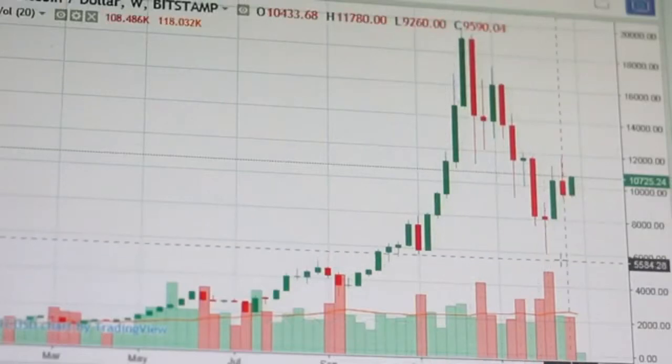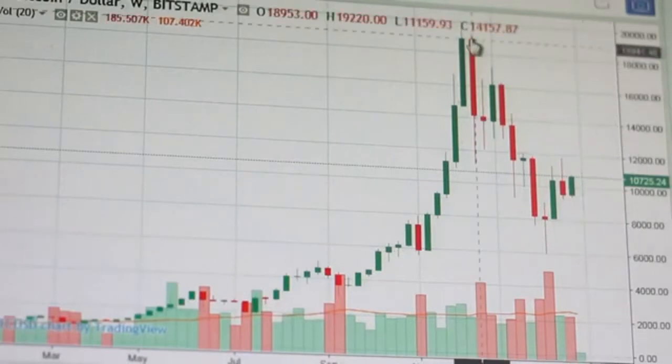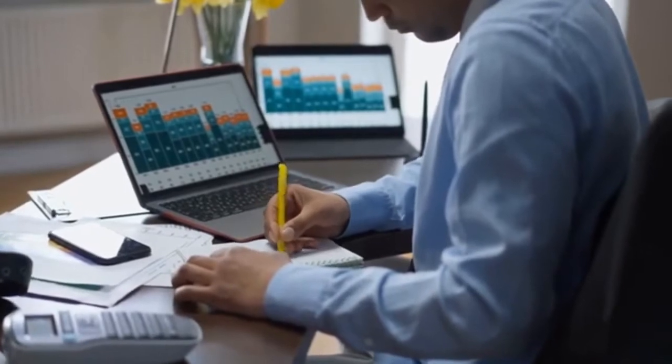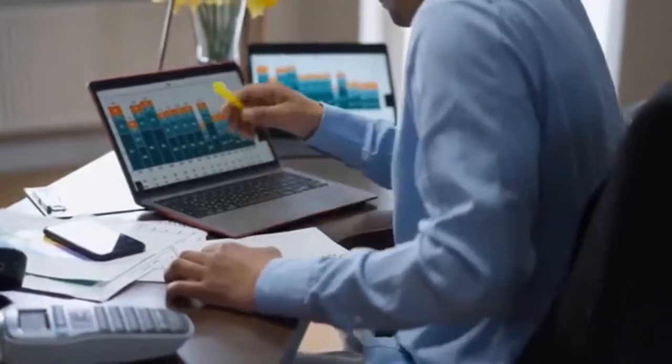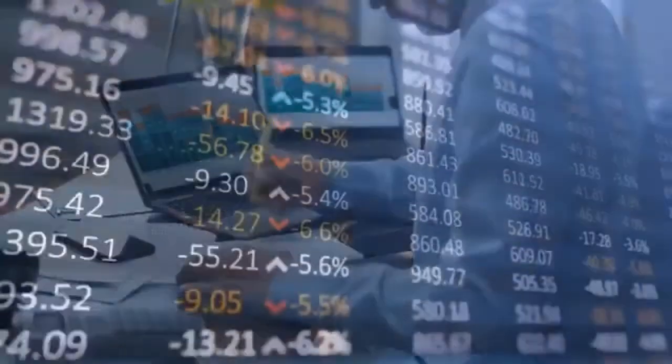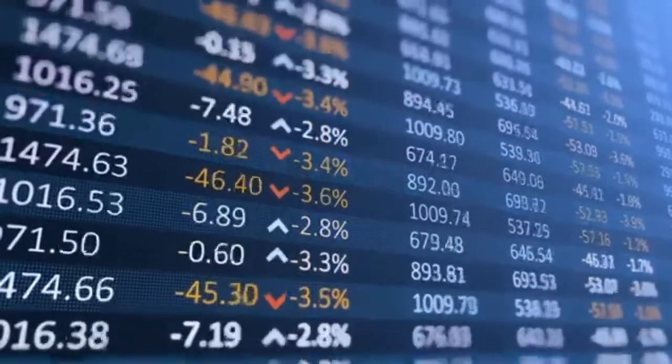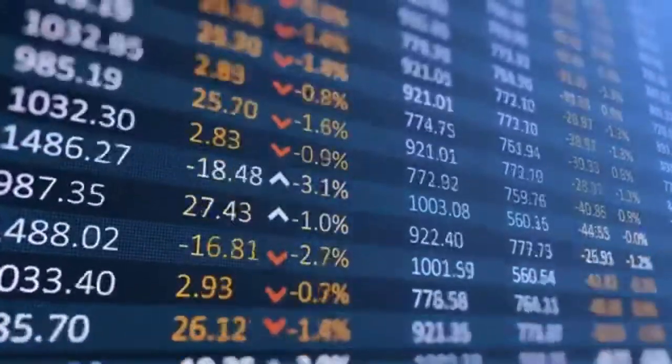What is Bitcoin? Bitcoin is a digital currency created in January 2009. It follows the idea set out in a white paper by the mysterious and pseudonymous Satoshi Nakamoto. The identity of the person or persons who created the technology is still a mystery. Bitcoin offers the promise of lower transaction fees than traditional online payment mechanisms.